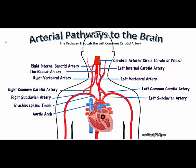Another pathway oxygenated blood can take from the heart to the head is through the vertebral arteries. Blood can travel through the brachiocephalic trunk to the right subclavian artery, then to the right vertebral artery, which forms the basilar artery, which travels to the cerebral arterial circle.